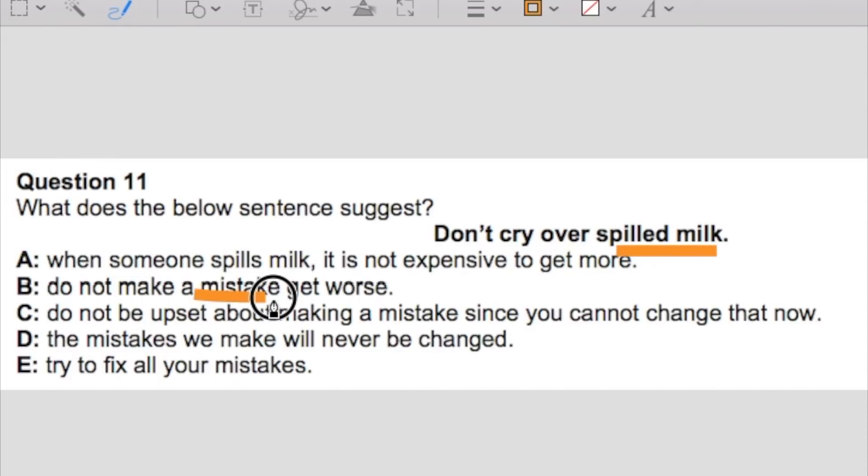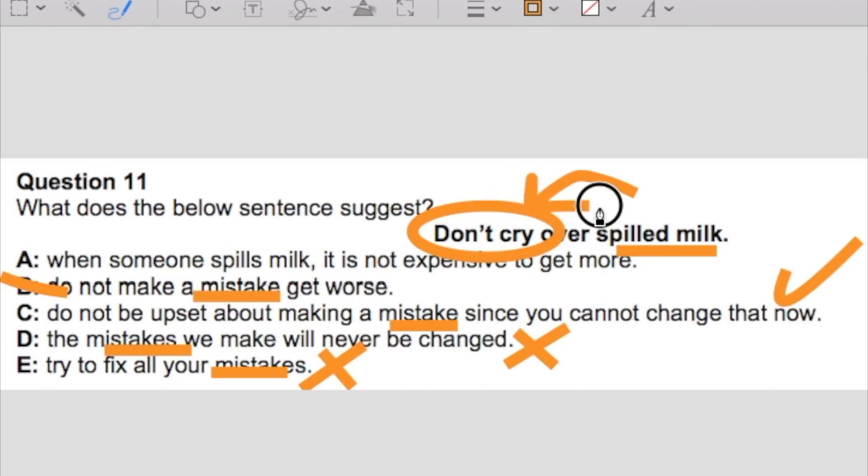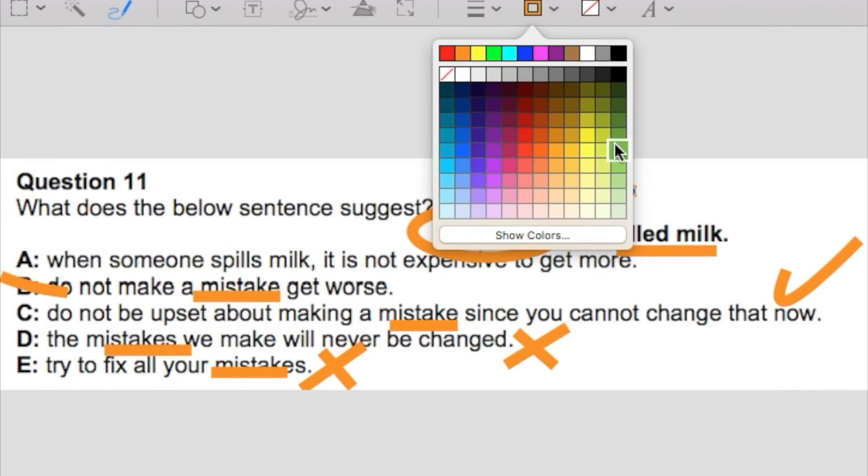So how do you answer this question then? Students who do this correctly will know the difference between the deeper meaning and literal. You can see here that this is about a deeper meaning. So it's not just about milk and it's expensive to get more. Spilled milk talks about a mistake. So this has a mistake, this has mistake, and mistakes again. But what's don't cry mean? Well, don't cry means don't get upset. Don't be sad about a mistake. So do not be upset about making a mistake since you cannot change that now. That seems about right. The key here is don't cry, don't be upset. So the answer to this question would be C.